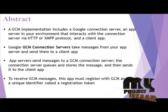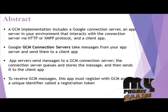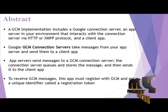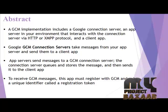A Google Cloud Messaging implementation includes a Google Connection Server, an app server in your environment that interacts with the connection server via HTTP or XMPP protocol, and a client application. The application servers send messages to a Google Cloud Messaging collection server, which stores the messages and then sends them to a client application.